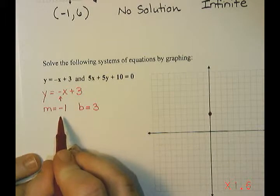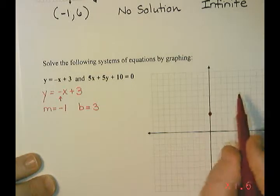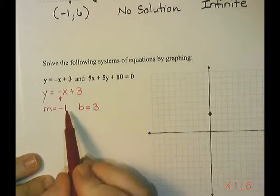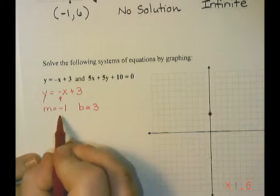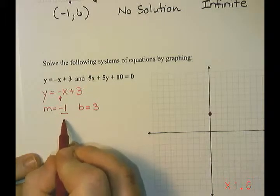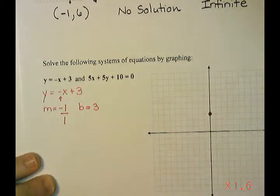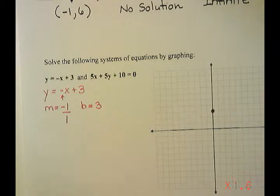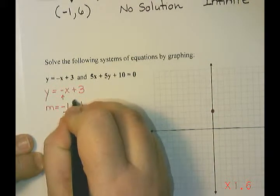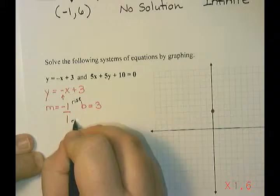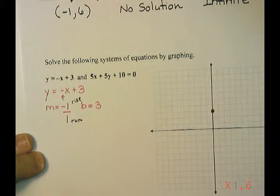And then I use my slope to help me find the additional points on the graph. So this is negative 1, secretly this is negative 1 over a denominator of 1, and slope is rise over run, or delta y over delta x.